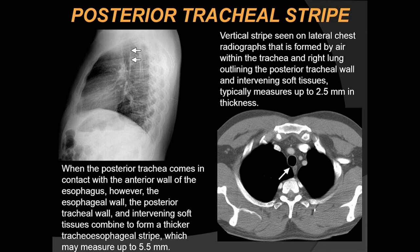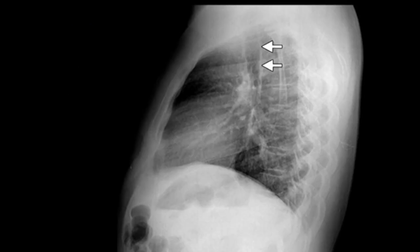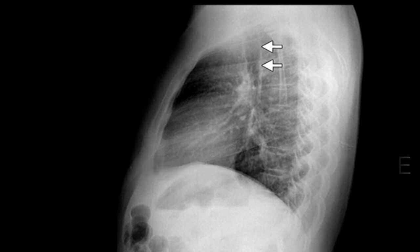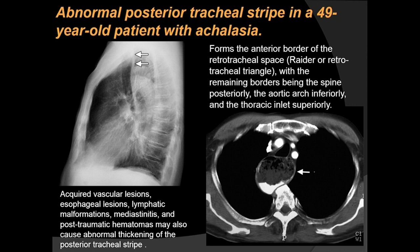The posterior tracheal stripe is a vertical stripe seen on the lateral chest radiograph, formed by the contrast between air within the trachea and the right lung outlining the posterior tracheal wall. It usually measures about 2.5 mm in thickness, but can measure up to 5 mm lower down. Here is an abnormal posterior tracheal stripe bulging anteriorly and thickened in a patient with achalasia cardia, where a dilated esophagus is pushing the tracheal stripe anteriorly.